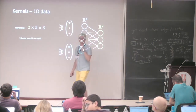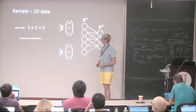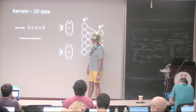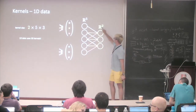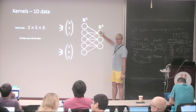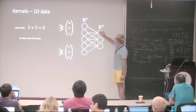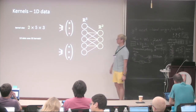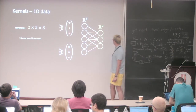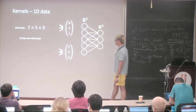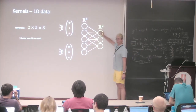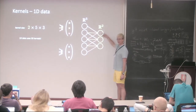Student question: What about the biases? The bias is just a vector — one bias per output kernel. So here we have two kernels, meaning just two bias terms. The bias is an offset term; each output node gets its own bias.